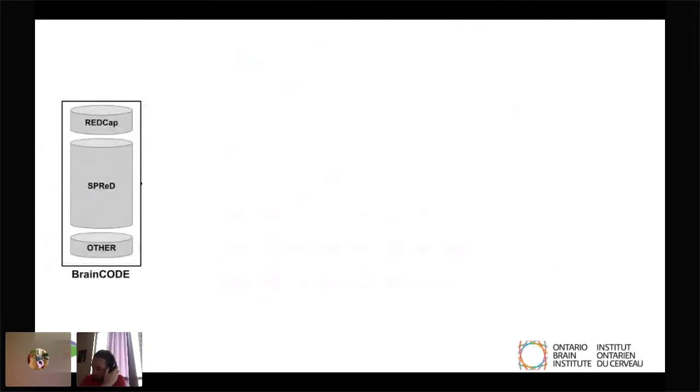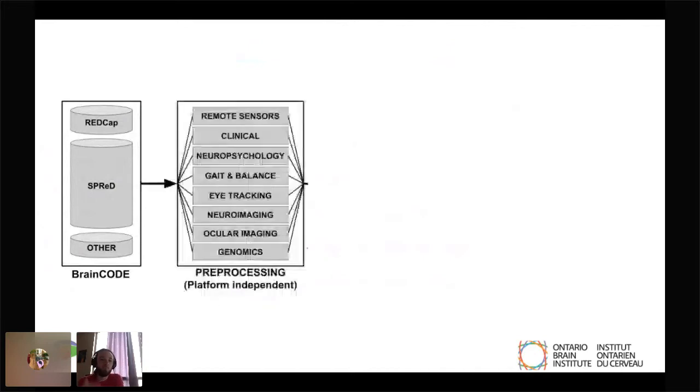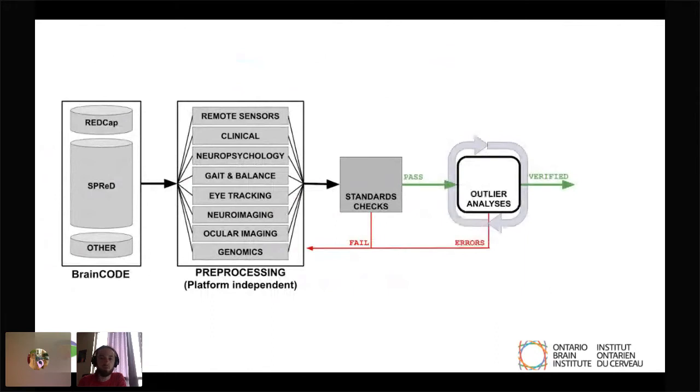Our pipeline, briefly, is that we have what's called BrainCODE by INDOC, which is a system of systems to house different types of data. REDCap will be for surveys and SREG will be for imaging and other types of data. Then all the data go down to the different platforms, specifically experts within those platforms to process, curate, and prepare the data. They'll go through a standards check with the neuroinformatics team. If it fails, it goes back. If it passes, it goes to an outlier analysis, and then once it passes outlier analyses, it heads out for release.